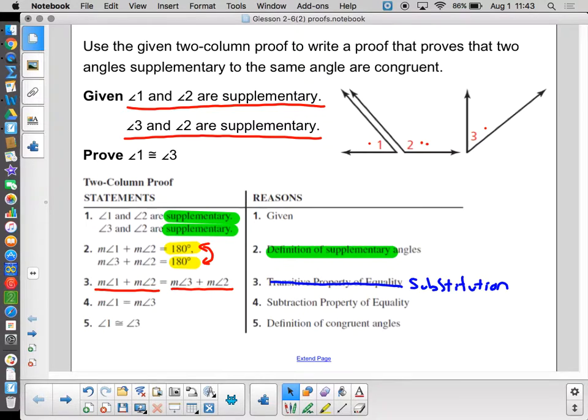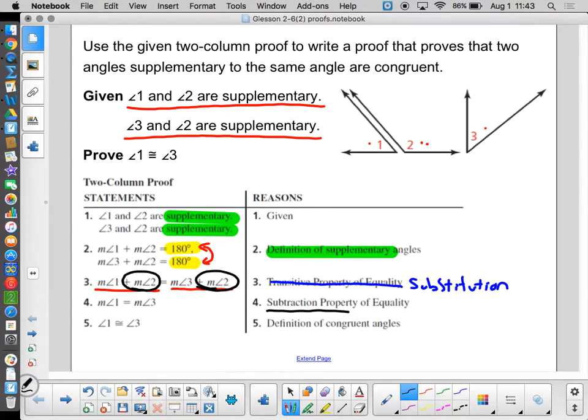Generally, you can use substitution wherever transitive would come in, but you can't always use transitive wherever substitution would be. If you're not sure which one it is, go with substitution. You won't be wrong. Then what do they do? They subtracted M angle 2 from each side, since it was the same on each side. They subtracted that away from each side, so the subtraction property. So we wind up with M angle 1 equals M angle 3, and what do we see several times already? If two things have the same measure, it means they're congruent. That's the definition of congruent. And there's our proof.